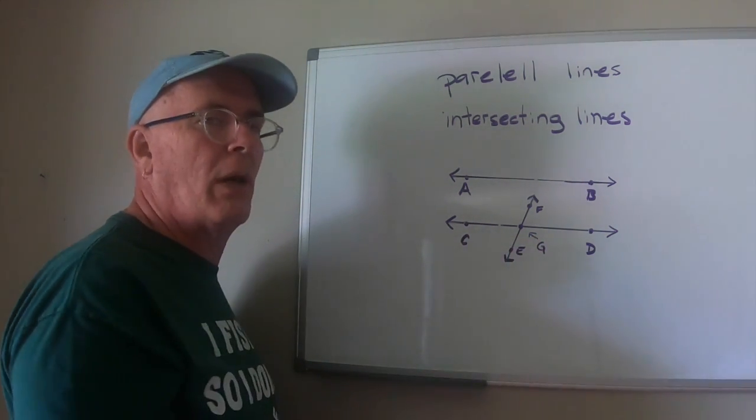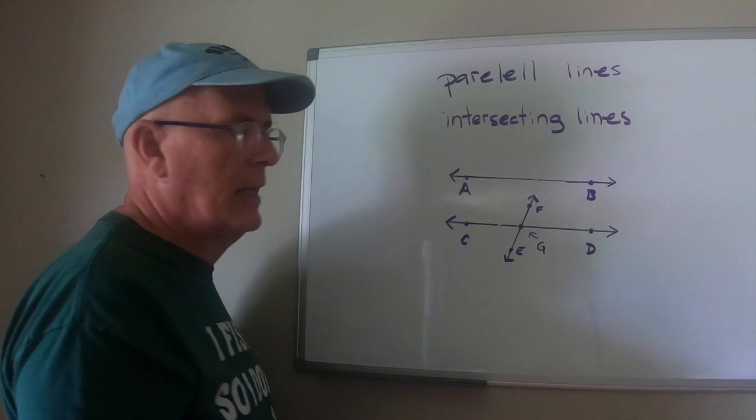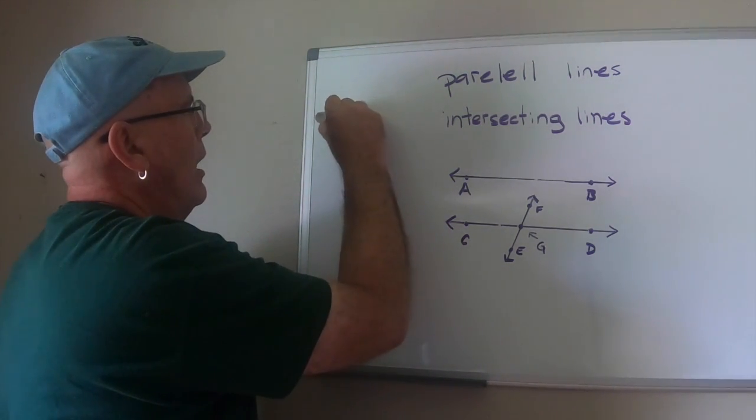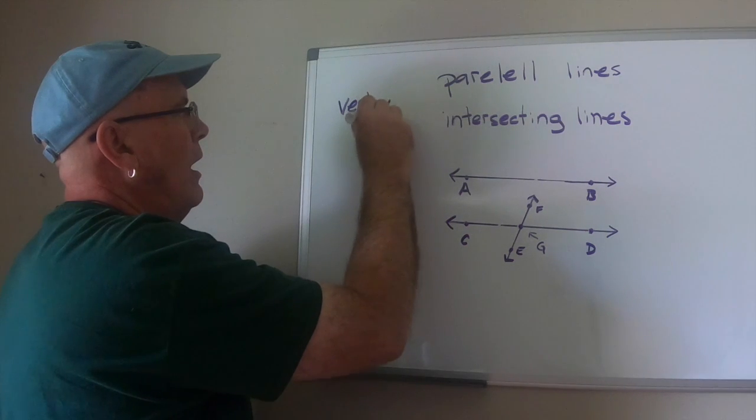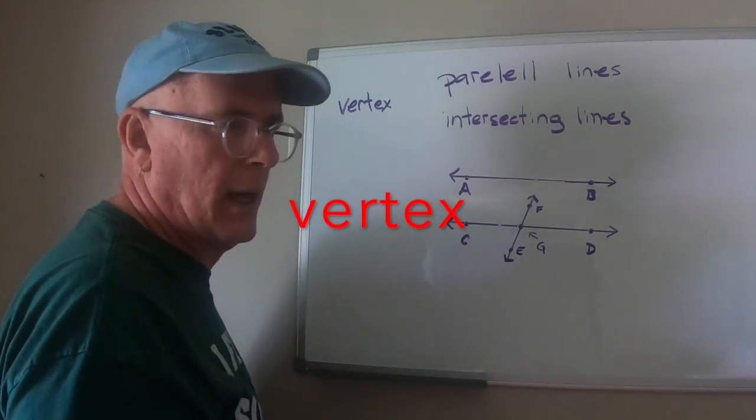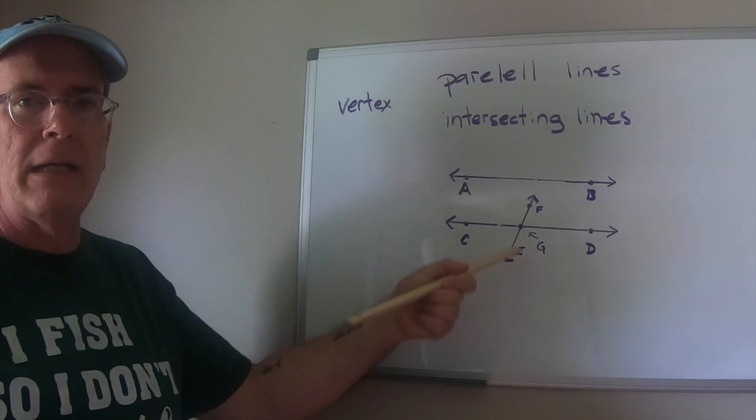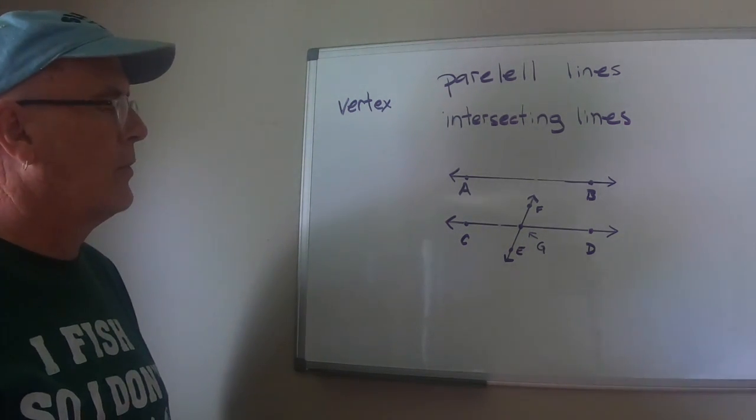Now the point where two lines intersect is called a vertex. A vertex is a point where two lines intersect.